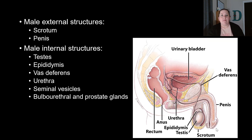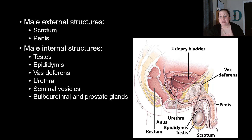Looking at the male structures, the male has some external structures as well: the scrotum, which houses the testes, and the penis, which has the urethra running through it — linking both the urinary and reproductive systems in males. The testes are the male gonads, responsible for producing sperm and testosterone. The epididymis, located right above the testes, is responsible for maturing the sperm and performing quality control — checking that the sperm is good quality before it enters the semen.